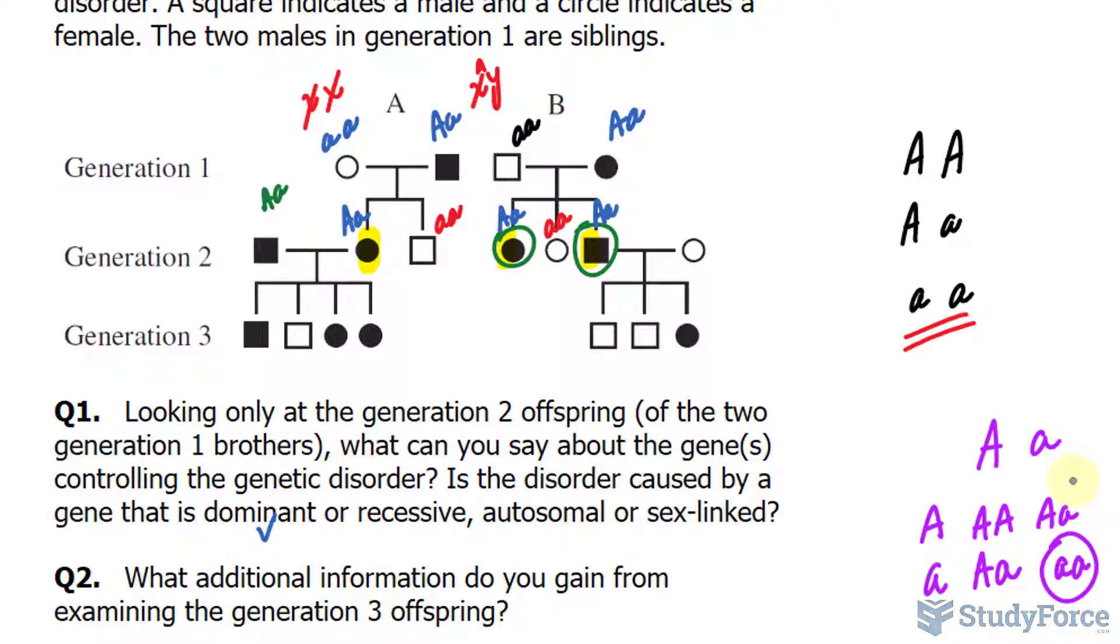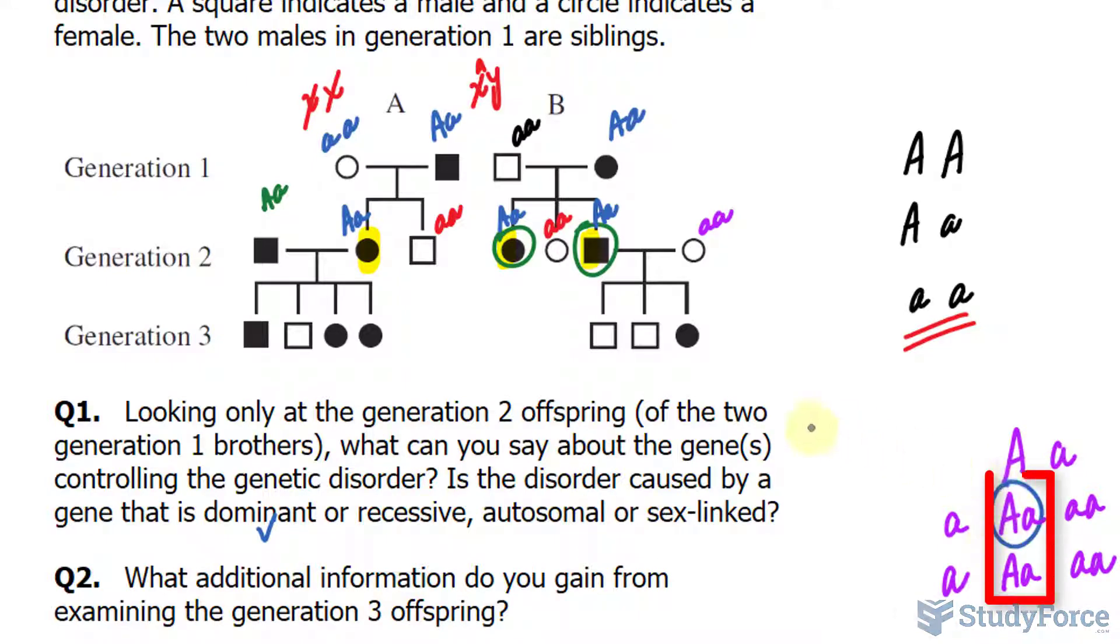So far what's unsettled is whether it is autosomal or sex-linked. Let's look at Lineage B and see if that's consistent. This female is little a little a, given what we've learned, and she is crossed with a man that is capital A little a. Doing the cross, we get the following. One of the offspring is affected, and the other two are not affected.